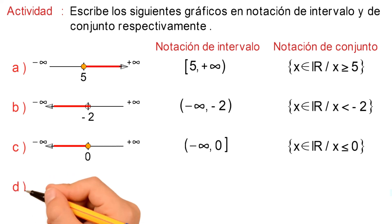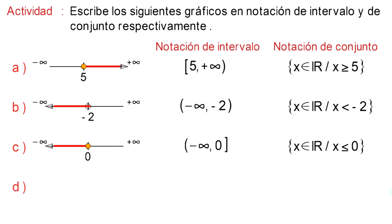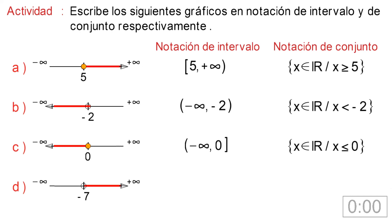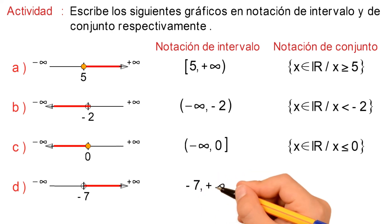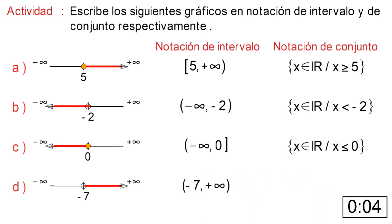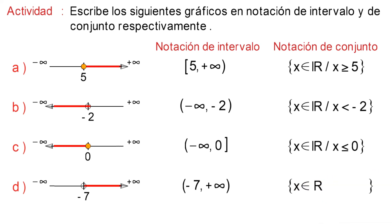Y por último, Literal D. Tenemos el gráfico, donde su notación de intervalo es desde menos 7 hasta más infinito entre paréntesis. Y su notación de conjunto es, entre llaves, donde X pertenece al conjunto de los números reales, tal que X es mayor que menos 7.